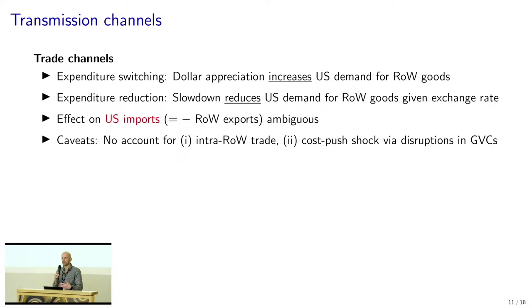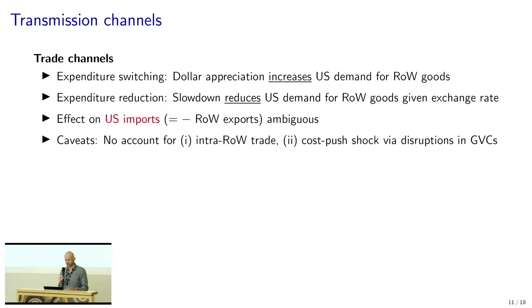On transmission channels, we broadly look at two types: trade and financial channels. In the context of trade, there's expenditure switching when the dollar appreciates as US monetary policy tightens — this increases US demand for rest-of-world goods, so it's actually expansionary for the rest of the world. There's also expenditure reduction, as the US economy slows down and reduces US demand for rest-of-world goods for a given exchange rate. So in principle, at least when it comes to bilateral trade between the US and the rest of the world, the role of the trade channel is ambiguous.